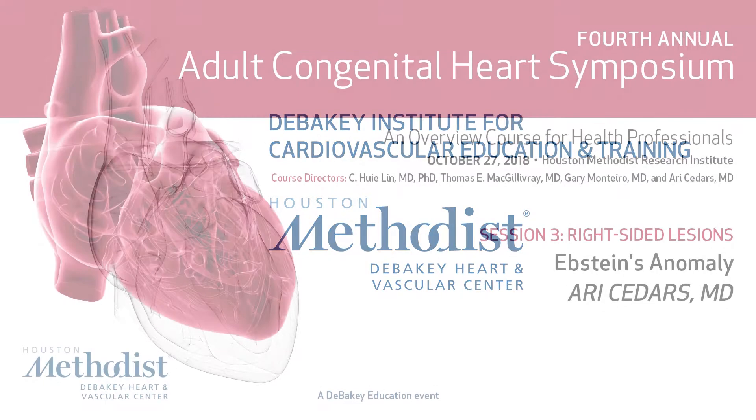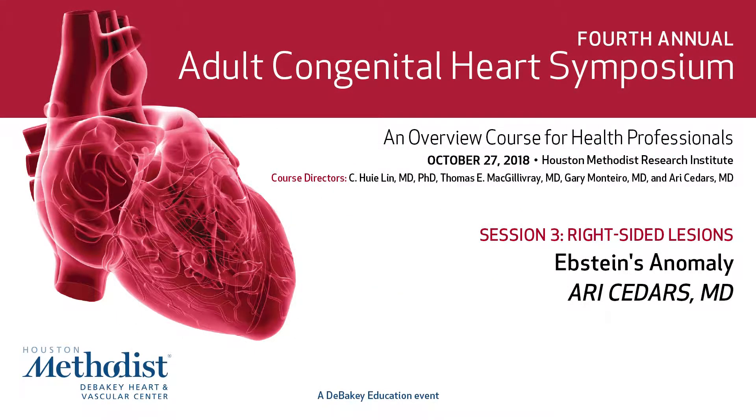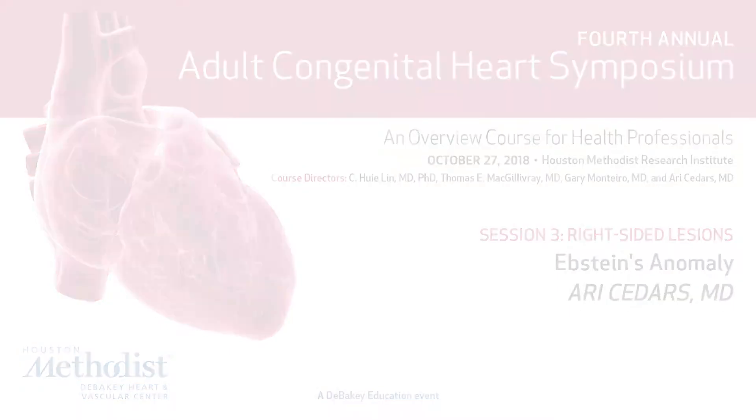I am going to speak about Ebstein's anomaly and pulmonary valve stenosis. I still don't have any disclosures relevant to this lecture. Ebstein's anomaly is an abnormality of the tricuspid valve. It's relatively rare — about less than 1% of congenital anomalies. Most commonly it's sporadic, and the sexes are equally affected.